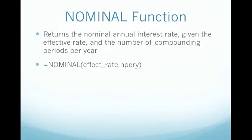So to start, I'm going to explain the definition. The nominal function returns the nominal annual interest rate given the effective rate and the number of compounding periods per year. The formula you use for the nominal function is equals nominal, then parentheses, effective rate, comma, number per year.